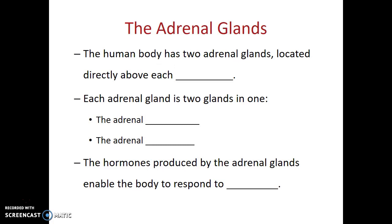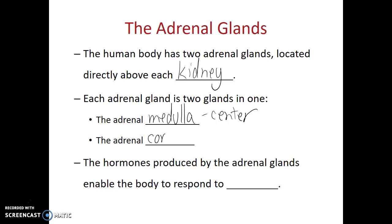The next gland within the abdomen that's part of the endocrine system are the adrenal glands. The human body has two adrenal glands, one located directly above each kidney. Each adrenal gland is really two glands in one: there's a center portion known as the adrenal medulla, and an outer region known as the adrenal cortex. So each adrenal gland has a medulla surrounded by a cortex.